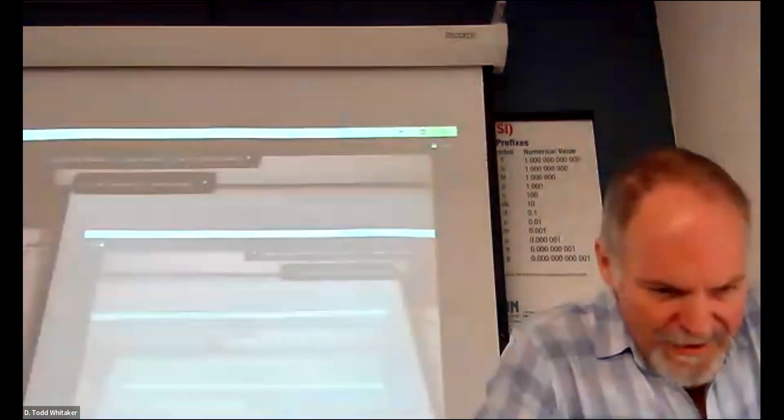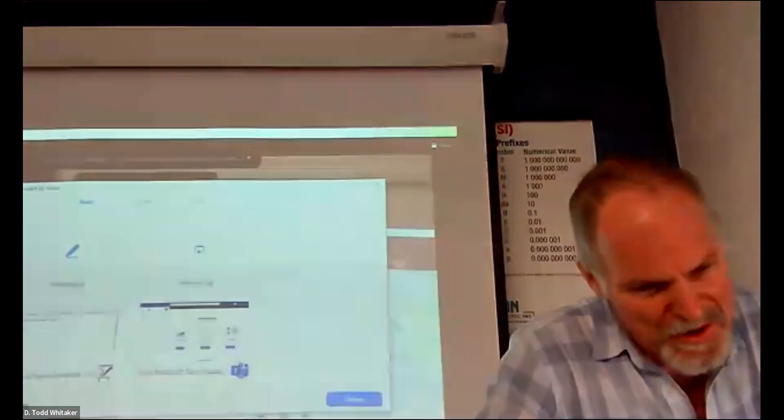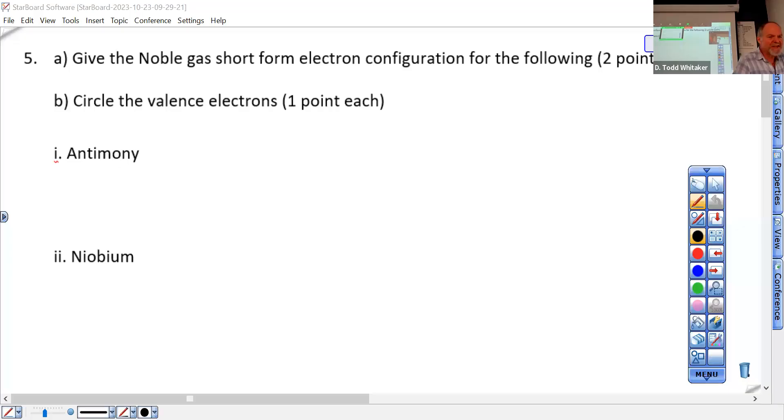Joining here, we go. Test two practice exam continued. Moving on to give the noble gas short form electron configuration. So what symbol is antimony? Don't start this question until you found out what antimony's symbol is. Don't look on the periodic table, it will be of no help to you right now.